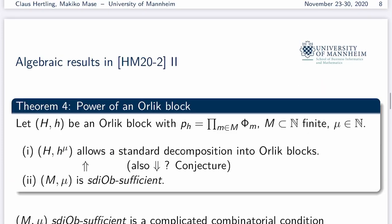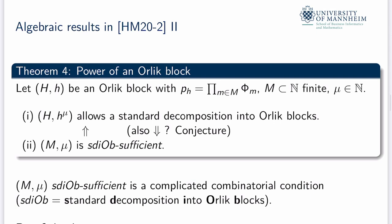The next result is much more difficult and closer to our singularity case. We start with one Orlik block H with automorphism h, whose characteristic polynomial is a product of cyclotomic polynomials, and the set M of natural numbers gives the orders of the eigenvalues. We consider a power of this automorphism and ask when the pair of lattice with its power allows a standard decomposition into Orlik blocks. We have a sufficient combinatorial condition on the set M and an additional natural number µ, which I call SDIOB-sufficient. We expect this condition is also necessary, but we do not have a proof of that conjecture. Sufficiency is the important case, and this will be applied later to the chain-type singularities.